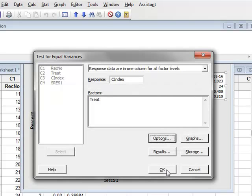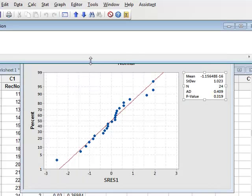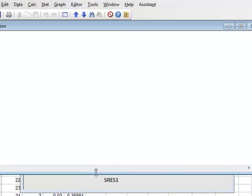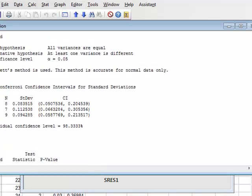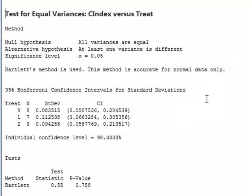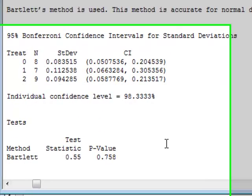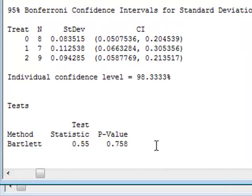And then run this analysis. The results will be in the session window, which has used Bartlett's method and has produced a p-value of 0.758, which says that we do not reject the null hypothesis that the variances were the same at all levels. And we can assume, therefore, for the purposes of the ANOVA, that we have equality of variance.